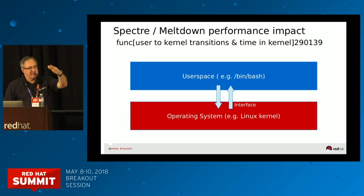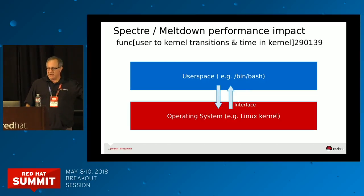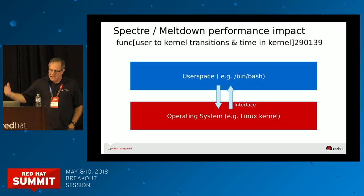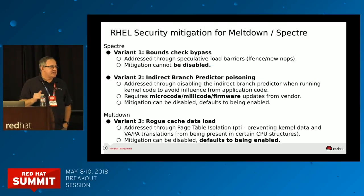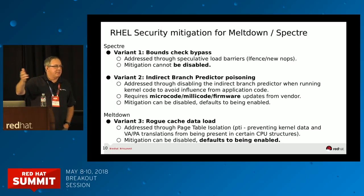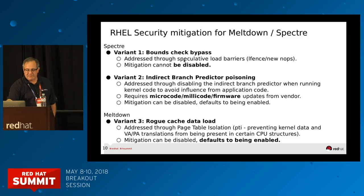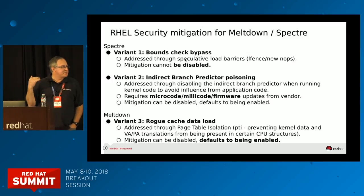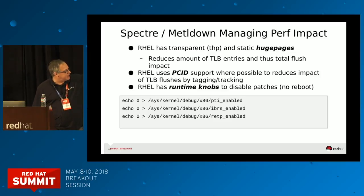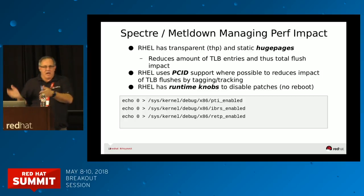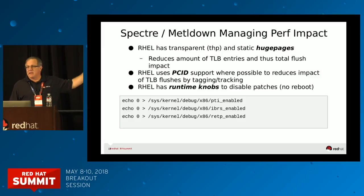These patches for Spectre and Meltdown are there because as you transition from user space into the operating system, or if you frequently traverse large memory subsystems, these hardware optimizations were speculatively executing. PTI — page table isolation — is the Meltdown fix. The other two for Spectre are around branch speculative execution. The three knobs are essentially PTI, IBRS, and by March the community had agreed upon a better technique using Retpoline compared to IBRS.